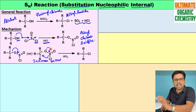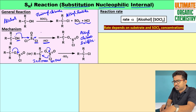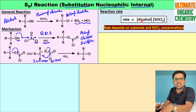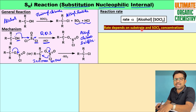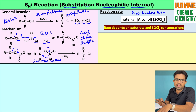Now let us discuss the rate of the SNI reaction. The rate law shows that the slow, rate-determining step is the formation of alkyl chlorosulphite. In this step, two reactants are involved — the alcohol and thionyl chloride. Therefore, the rate is directly proportional to the concentration of alcohol and the concentration of thionyl chloride. This is why the SNI reaction is an example of a bimolecular reaction.